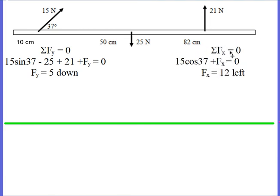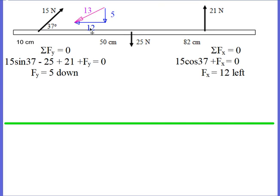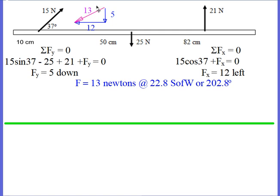Similarly, looking at the x-behavior, you only get an x-contribution from this one force, which equals 12. So this component needs to be 12 going in the negative direction, to the left. This force therefore has 5 newtons down and 12 newtons to the left, giving a resultant force of 13 newtons at 22.8 degrees south of west — or equivalently, 202.8 degrees.